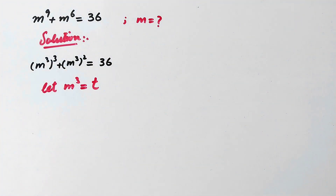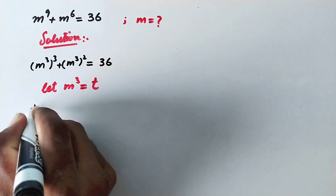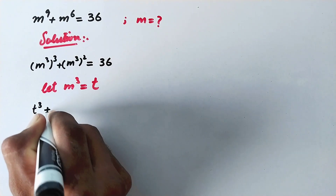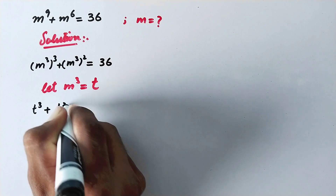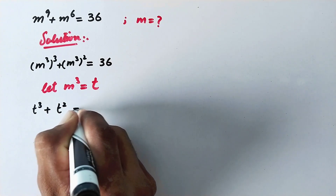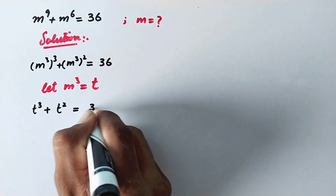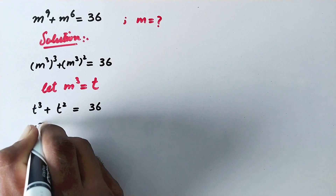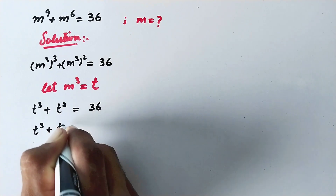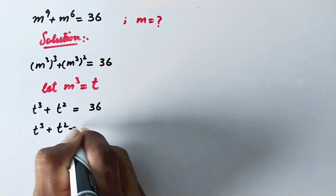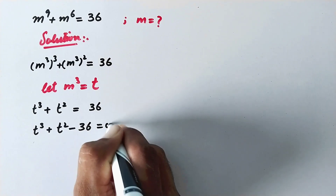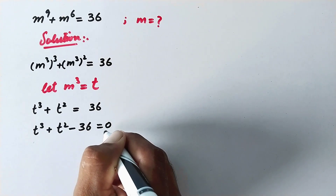So here we will write t cubed plus t squared is equal to 36, or we can write t cubed plus t squared minus 36 is equal to 0.